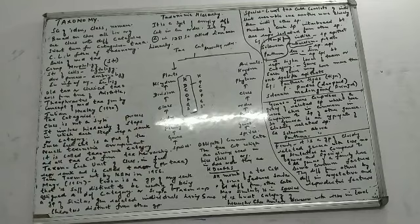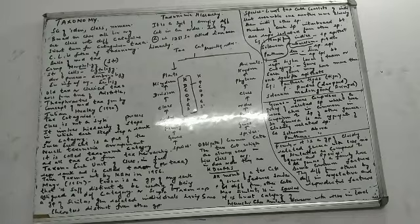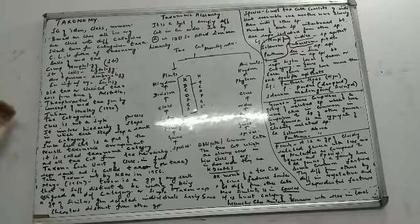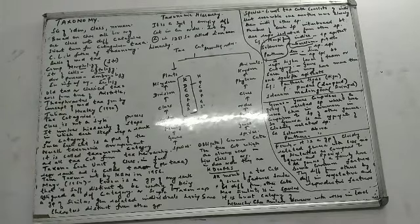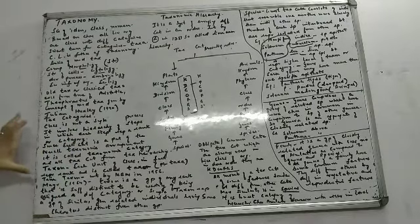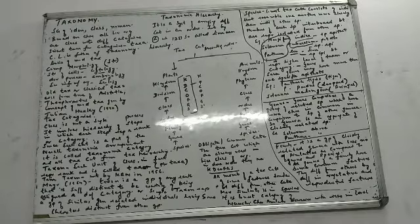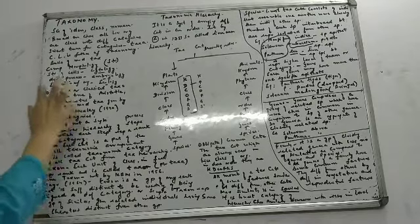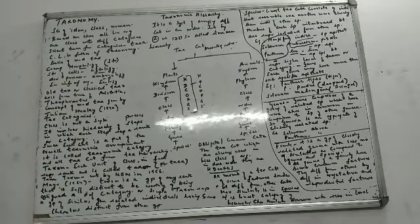So I have given you three terms: first is classical taxonomy — the old system — associated with Aristotle and Theophrastus. Then the concept of modern taxonomy, given by Julian Huxley. Now let's talk about taxonomic categories. Classification is not a single step process — it involves a hierarchy of steps.